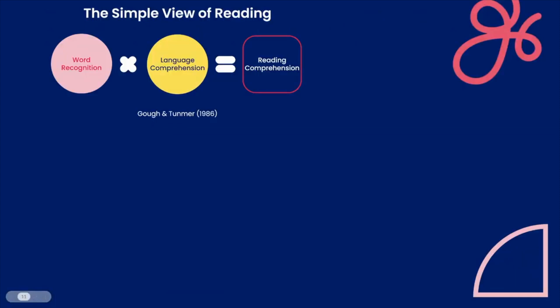The simple view of reading was developed by Gough and Tunmer in 1986. Gough and Tunmer proposed the simple view of reading to clarify the role of decoding in reading.